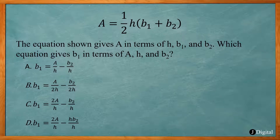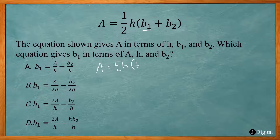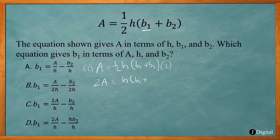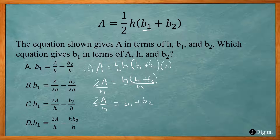This problem says the equation gives a in terms of h, b1, and b2. Which equation gives b1 in terms of a, h, and b2? This is a literal equation problem — we want to get b1 by itself. We have a equals one-half h times (b1 plus b2). First, multiply both sides by 2 and divide by h, so we get 2a over h equals b1 plus b2. Then subtract b2 from both sides: 2a over h minus b2 equals b1.